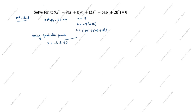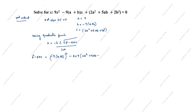What is b²−4ac? b = −9(a+b), so b² = [−9(a+b)]² = 81(a+b)². And 4ac = 4 × 9 × (2a²+5ab+2b²) = 36(2a²+5ab+2b²). So b²−4ac = 81(a+b)² − 36(2a²+5ab+2b²).